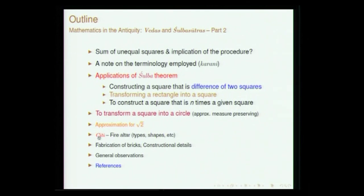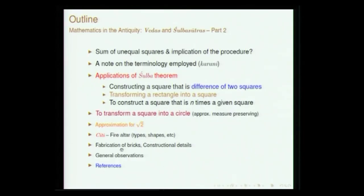We will see the approximation for root 2 and how the Shulva Sutra Karas arrived at these values. Then, towards the end of the talk, I will discuss what are known as Chittis — basically collecting things together, putting things together. We have several Chittis listed: Prauga Chittis, Kanka Chittis, Ratha Chakra Chittis, Shiena Chittis, and so on. These names are derived from the shape of the altar in which it is constructed. Shiena means a falcon, so the Chitti is constructed in the form of a falcon bird.